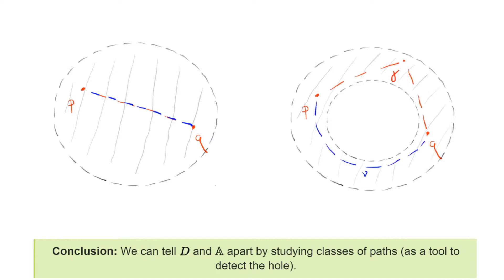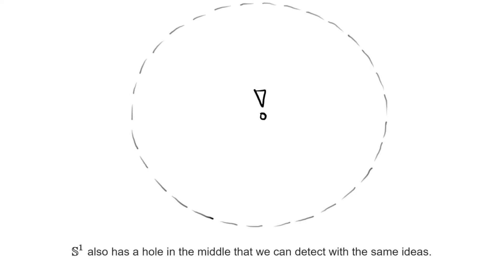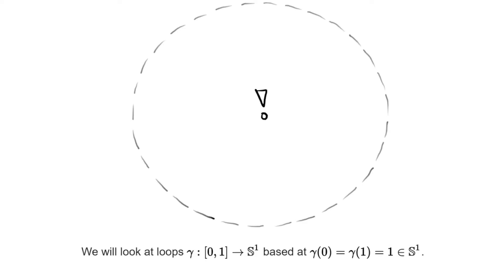Let us use our insight about paths to study other topological spaces. Another good example is the circle less one, and it seems pretty clear that it has a hole in the middle that we can try to detect. For simplicity, let us focus on paths that begin and end at one, and we will call this quite descriptively loops.